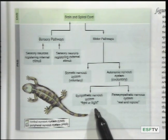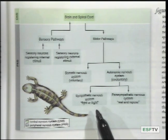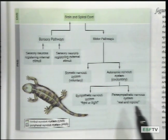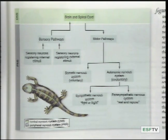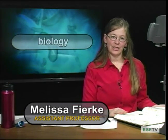This autonomic nervous system can be broken into the sympathetic nervous system and the parasympathetic nervous system. The sympathetic nervous system is responsible for a fight-or-flight response, and the parasympathetic nervous system is what is used during a rest-and-repose state. With that, we will stop here and come back in another segment to look at how the nervous impulse is actually transmitted. Thank you.